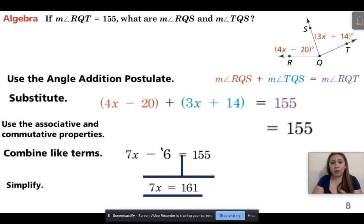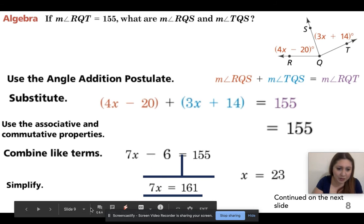Then I divide both of these by seven, and I get x equals 23. All right, then I'm going to continue to the next one. So take this x equals 23, and we're going to go off to the next slide because I ran out of space. All right, so take this x equals 23.